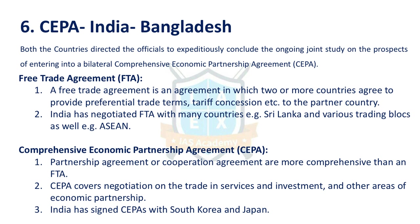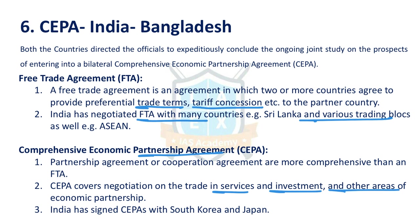Next issue is CEPA between India and Bangladesh — Comprehensive Economic Partnership Agreement. There are two major types of trade agreements: FTA (Free Trade Agreement), which provides preferential trade terms and concessions, and CEPA, which is a comprehensive agreement covering goods, services, investment, and other areas. India has signed CEPAs with South Korea and Japan and is pursuing CEPAs with Australia and Bangladesh. Talks with Bangladesh are ongoing but not yet finalized.